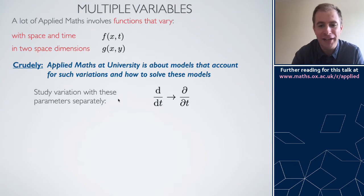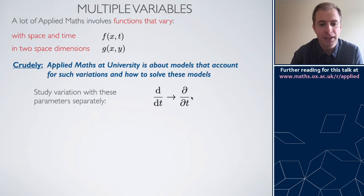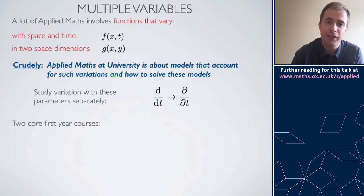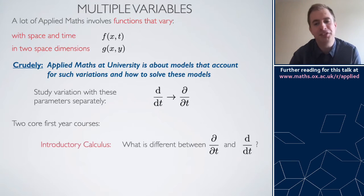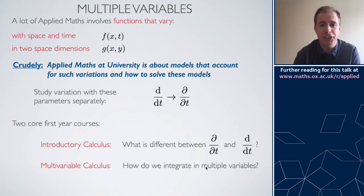To handle that, we need some notation. The derivative from school is written with a straight d/dt, but when thinking about multiple variables you need to be more careful and distinguish it using a curly d/dt — a partial derivative. There are two courses in the first year of the Oxford undergraduate that deal with this notation: one covering the difference between partial and ordinary derivatives, and the second covering integration in more than one variable.